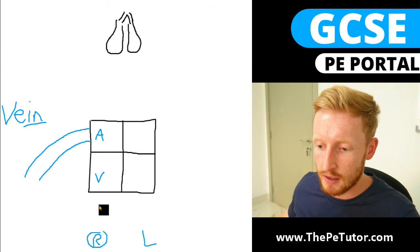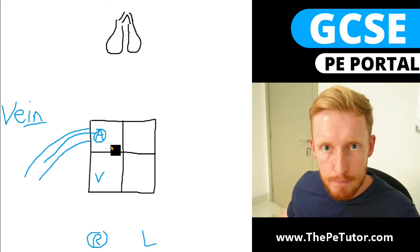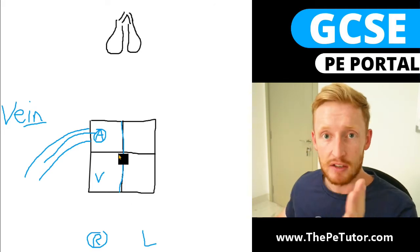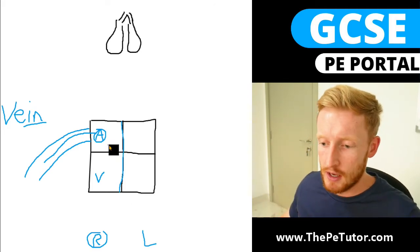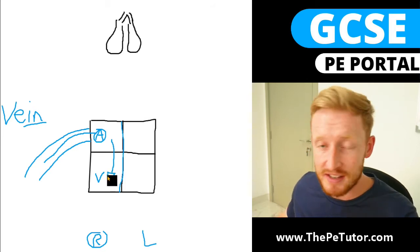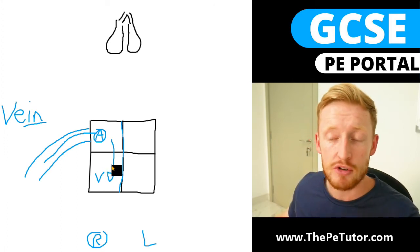Putting that together, we know we're dealing with the right atrium. Blood returns from the vena cava into the right atrium. It must stay on the right-hand side because we're dealing with deoxygenated blood and we don't allow mixing to go across the septum. So we know that the blood then travels down into the right ventricle.